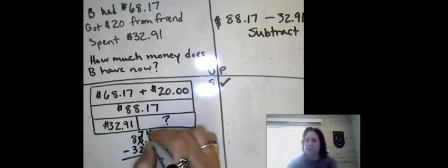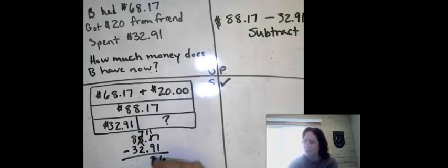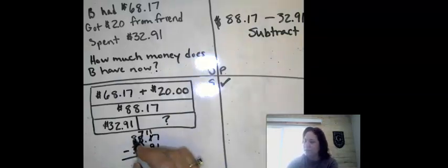All right, now we can do it. 11 minus 9 is 2. Drop down your decimal point. 7 minus 2 is 5 and 8 minus 3 is also 5.